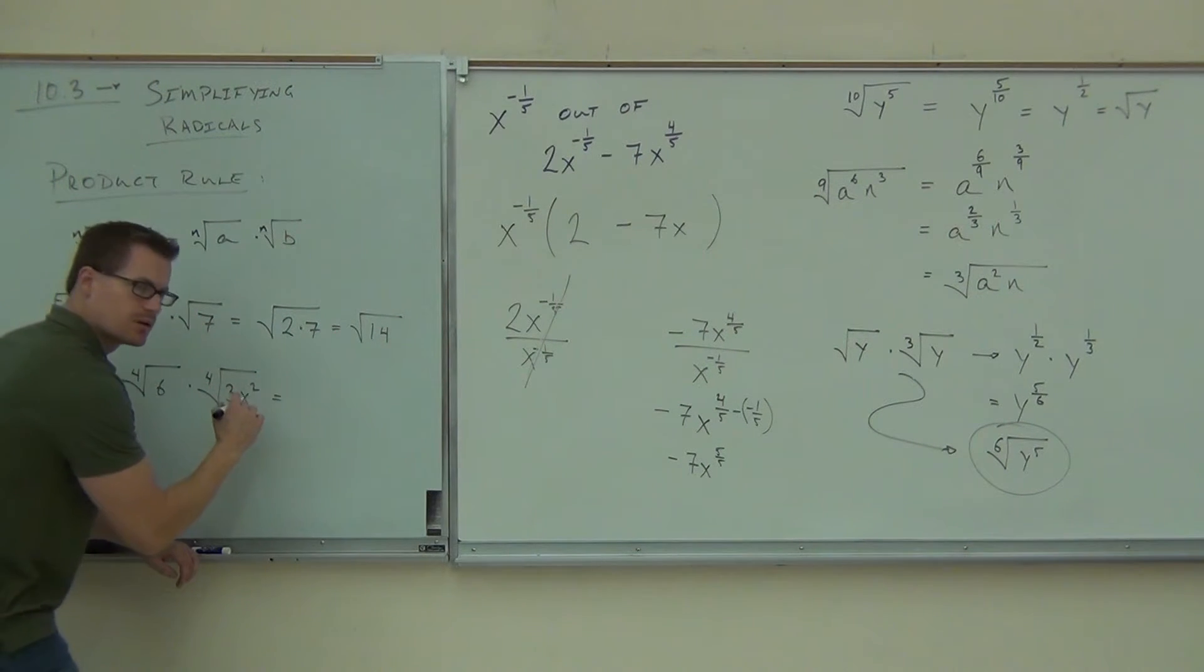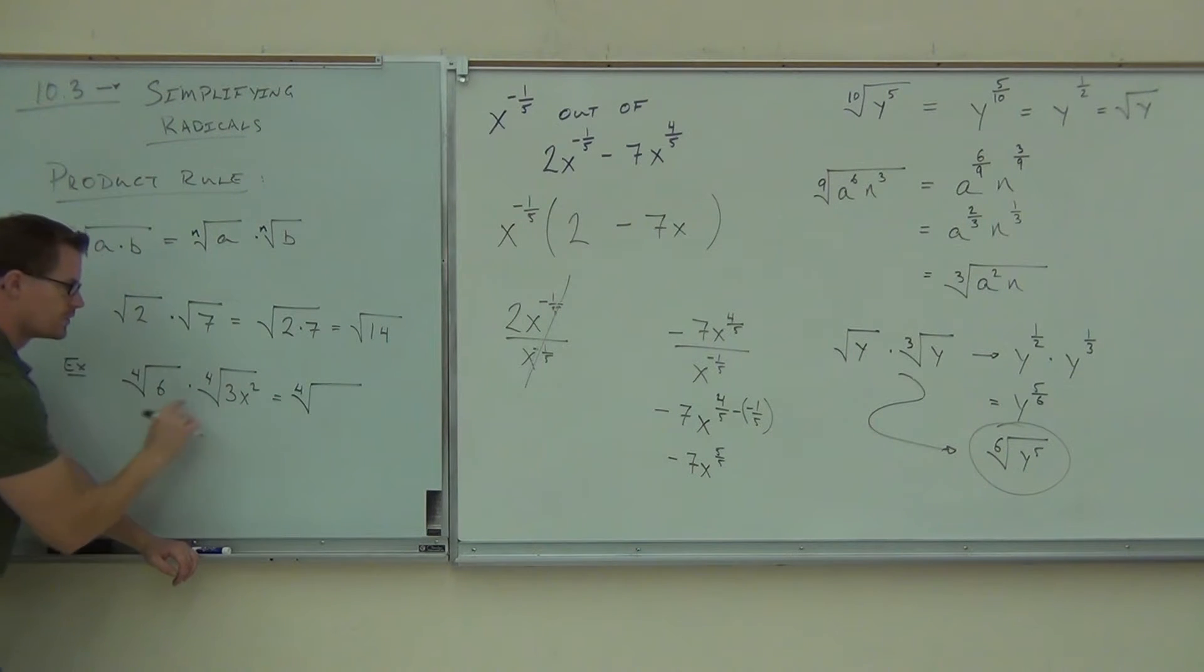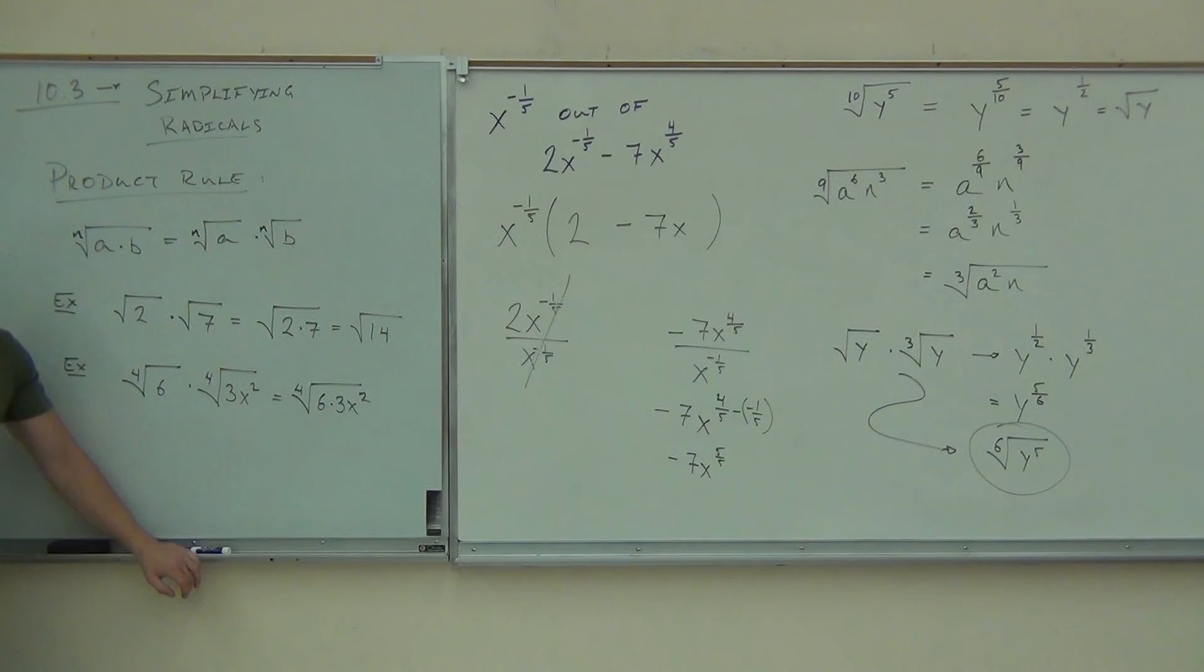So what type of root are we going to have, ladies and gentlemen? Fourth root. Fourth root of six times three x squared. Good. How much is six times three x squared? Eighteen x squared. Okay.